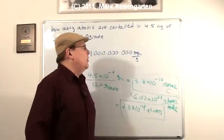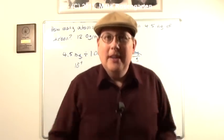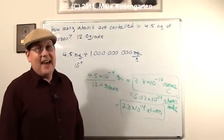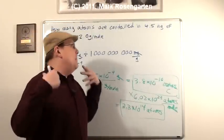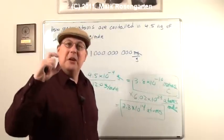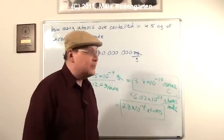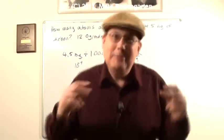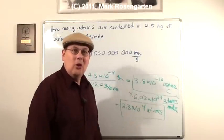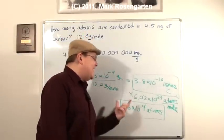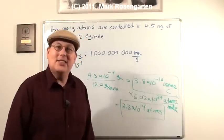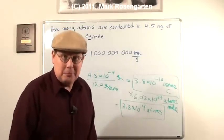And this comes out to 2.3 times 10 to the 14th atoms of carbon. It's 4.5 billionths of a gram. And yet still, even though you have such an incredibly tiny number of grams, there are so many atoms in a mole that you still end up with a gigantic number of atoms, but still not even a number of atoms that you could see without a serious microscope.